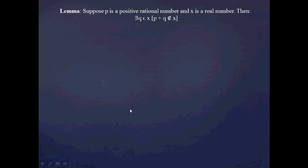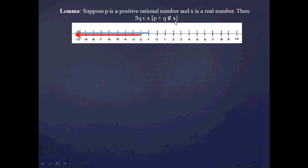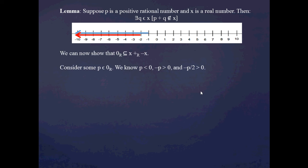Proving the reverse inclusion is going to be slightly more difficult, and to make it easier I'm going to introduce a lemma. The lemma says that if p is any positive rational number and x is any real number, then I can always find some rational number q in x such that q plus p is not in x. This is actually quite intuitive: if I take a Dedekind cut and shift it to the right by a positive amount, I always generate some new elements that weren't in the original cut. I'll leave the proof of that lemma as an exercise, but it's going to make it easier to show that zero is a subset of x plus negative x.